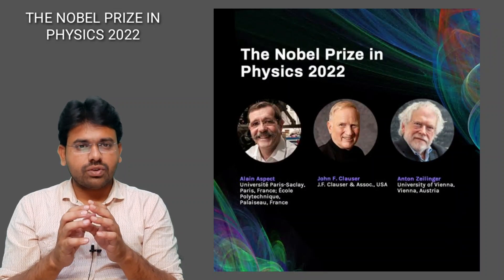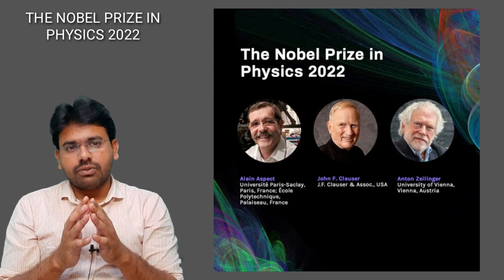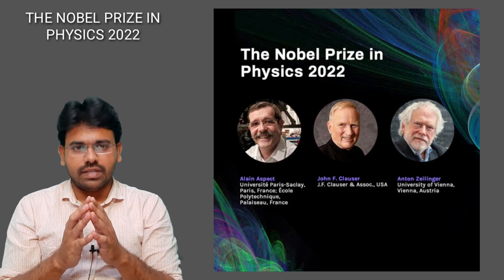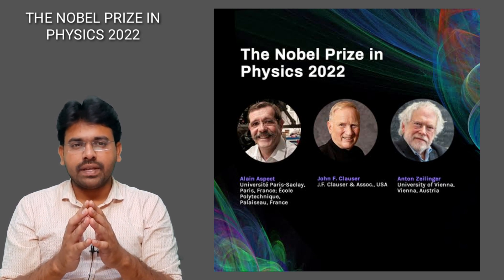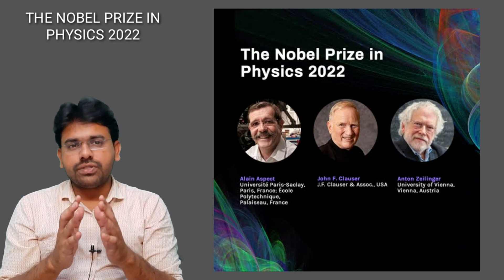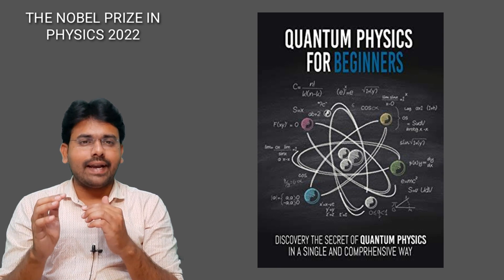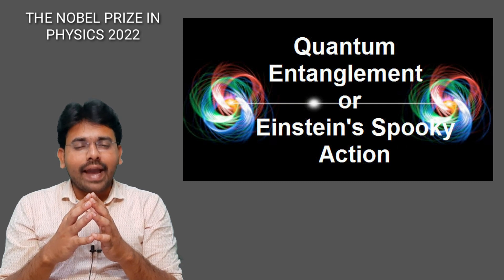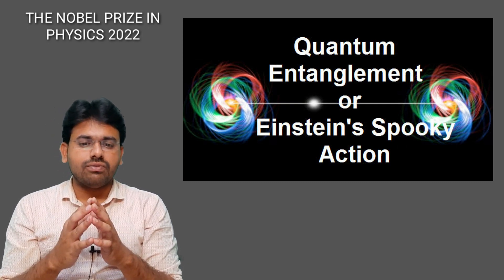The Nobel Prize in Physics 2022 was awarded to John F. Clauser, Alain Aspect, and Anton Zeilinger. They were given the Nobel Prize for their work in physics, specifically for discovering and proving Quantum Mechanics and Quantum Entanglement — a concept that even Einstein called 'spooky action.'